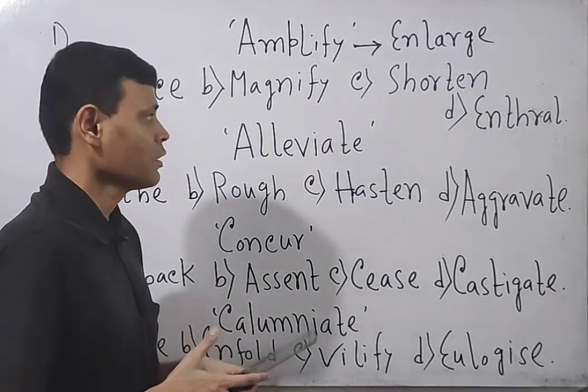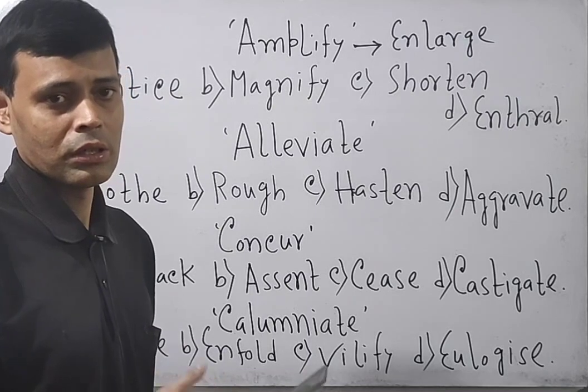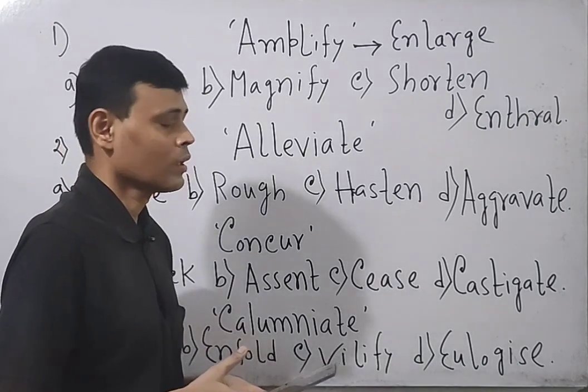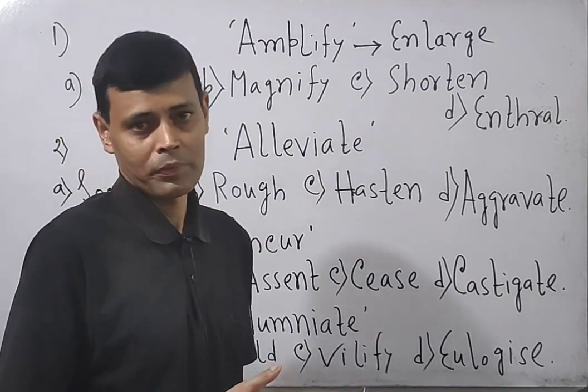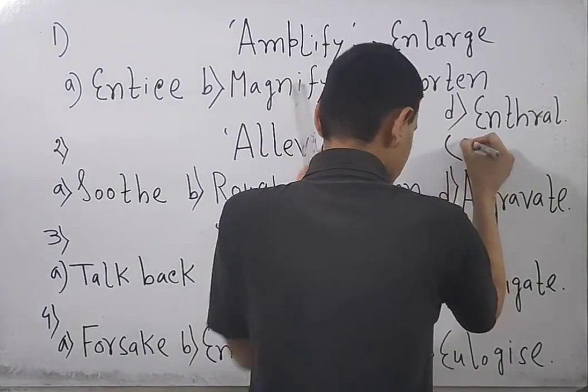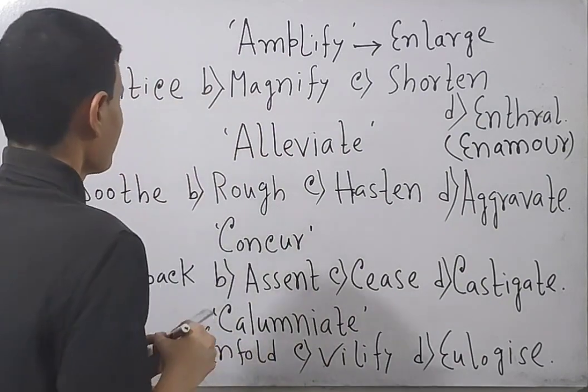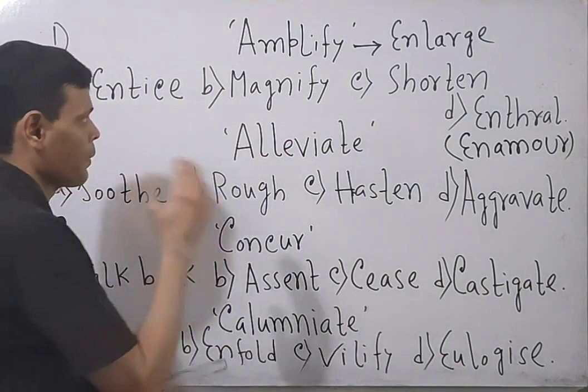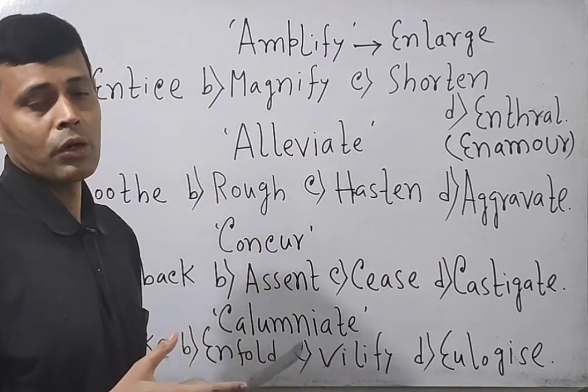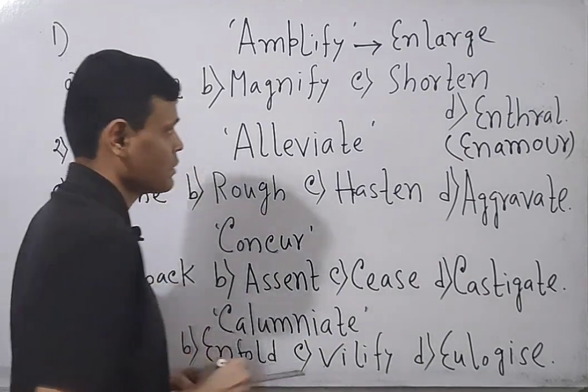Now if I say shorten, shorten means it is opposite to enlargement. Enlarge, shorten. Enthrall means you can say greatly fascinated or greatly enamored or spellbound. So the exact antonym is shorten, that means option C.